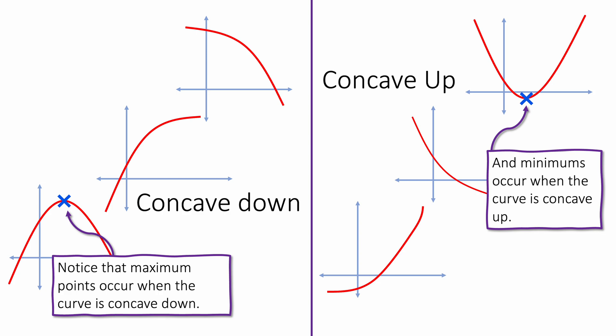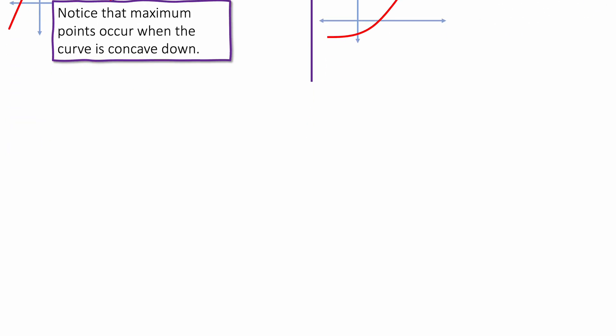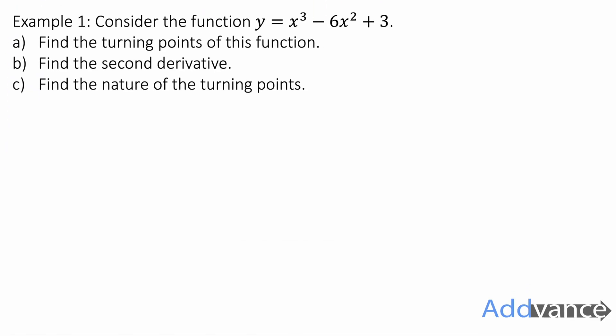Those two coordinates marked with x's are maximums or minimums — a maximum if it's concave down, a minimum if it's concave up. That's a key fact that will help you answer exam questions. Example 1: consider the function y equals x cubed minus 6x squared plus 3. Find the turning points of this function, find the second derivative, and find the nature of the turning points.